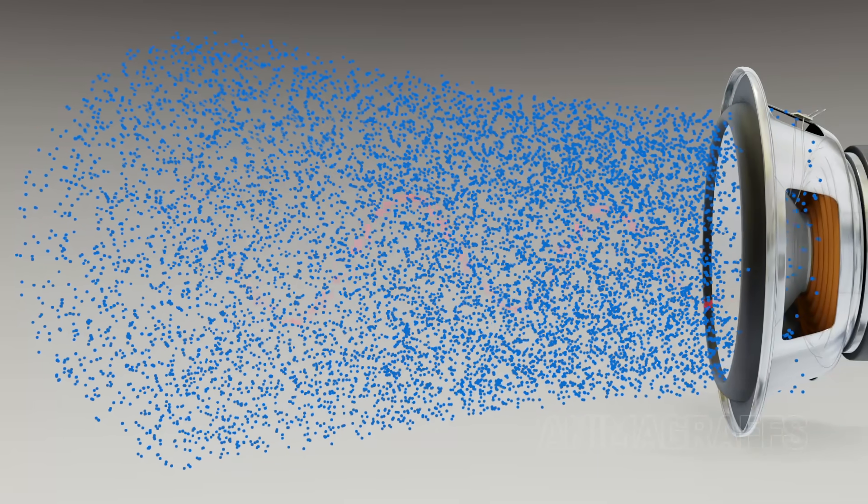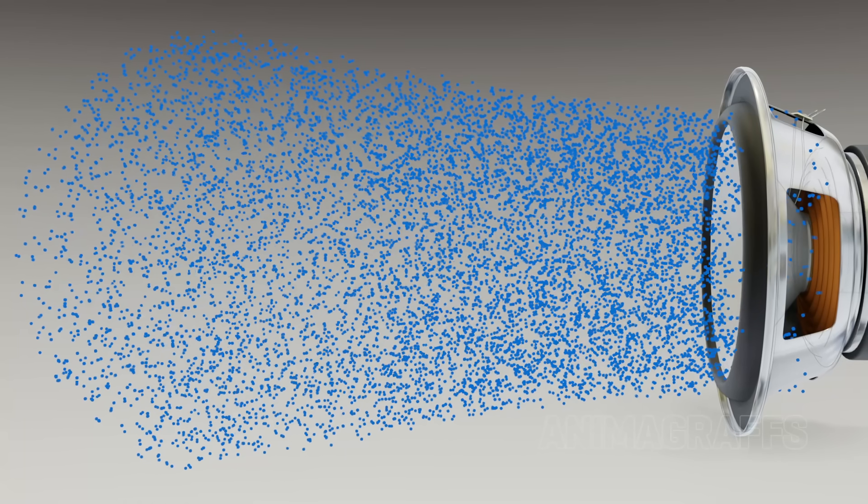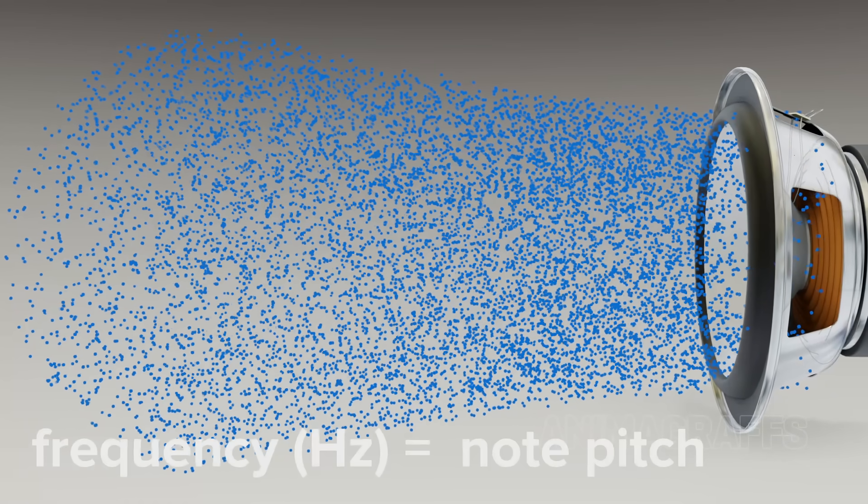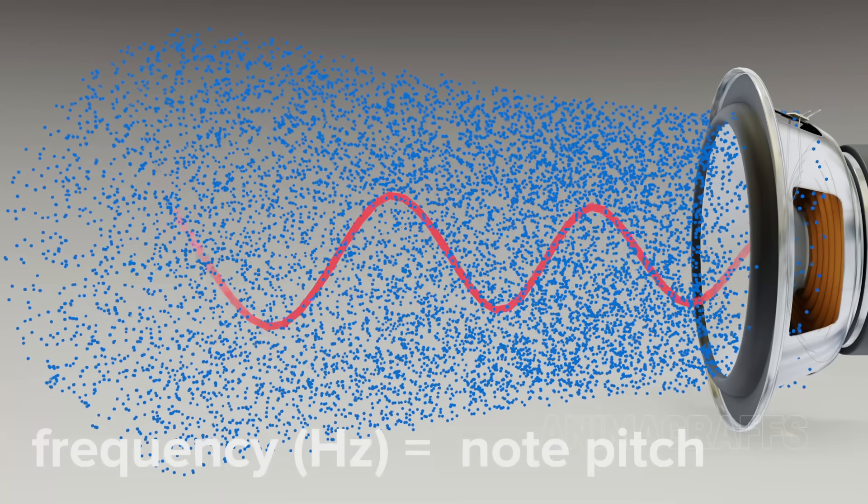To make high and low sounds, the speaker vibrates faster or slower. The wave rate is its frequency measured in hertz, or in musical terms, its note pitch.